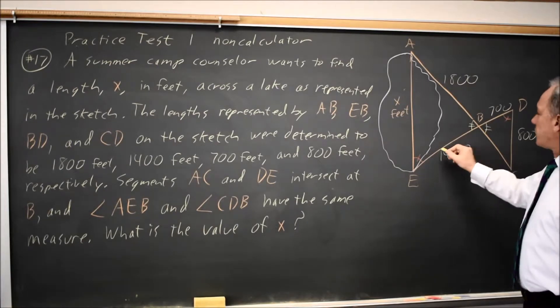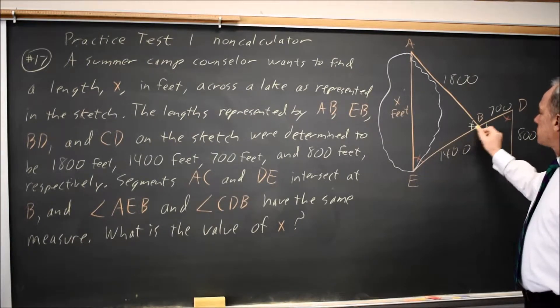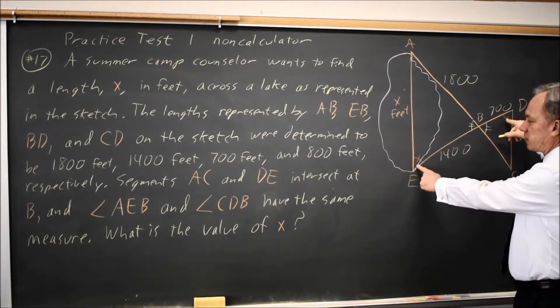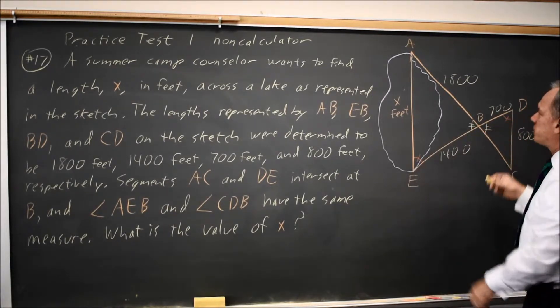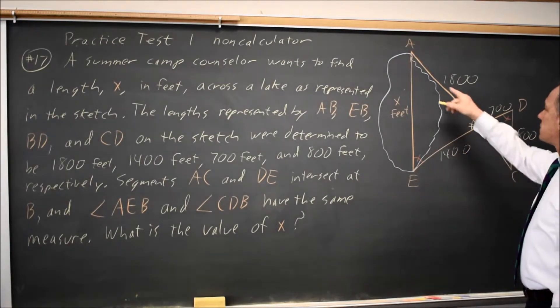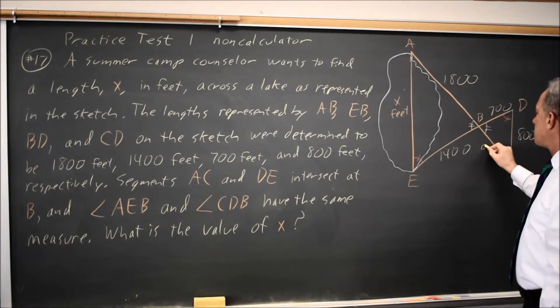Since we have similar triangles, and these two sides, the sides between these opposite angles and these angles we're told are equal, are in ratio 2 to 1. The other sides are also in ratio 2 to 1. If we needed this length, since this is 1,800, this would be 900.